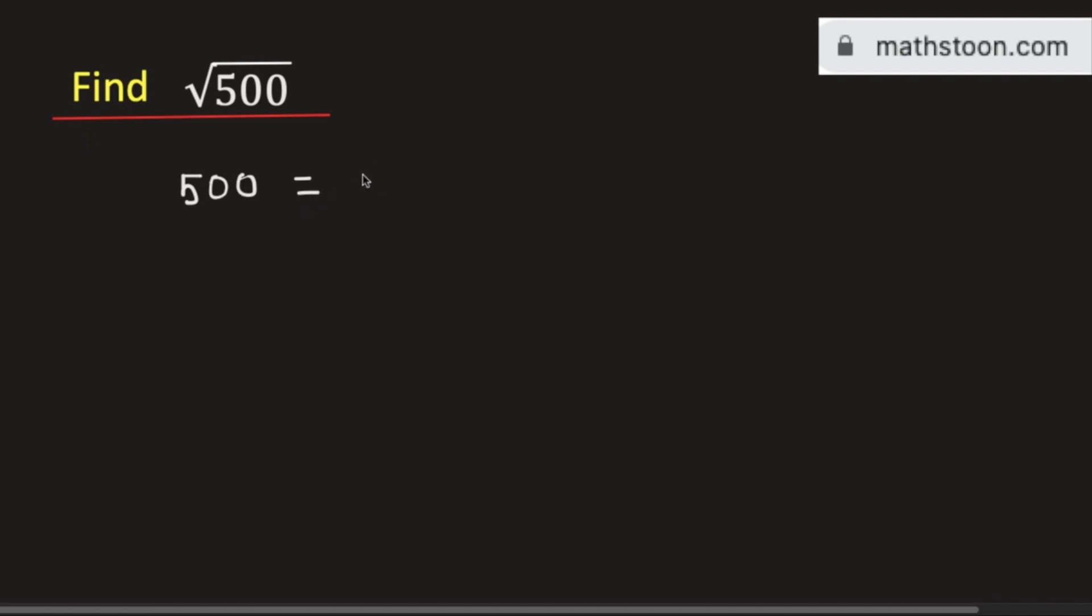See that 500 can be written as 100 times 5. Here 100 is a perfect square which is the square of 10.